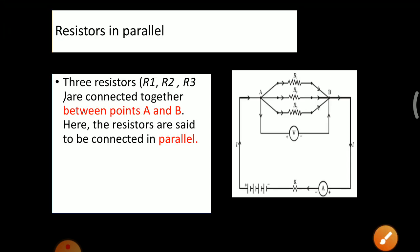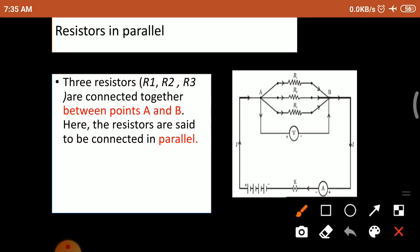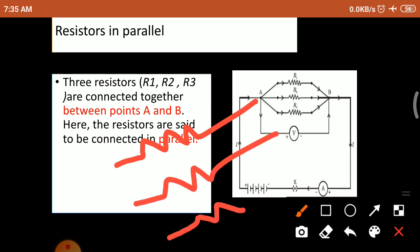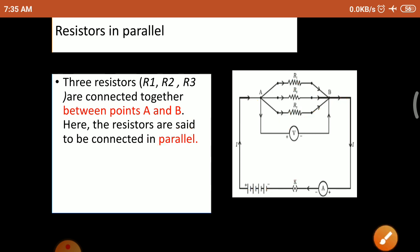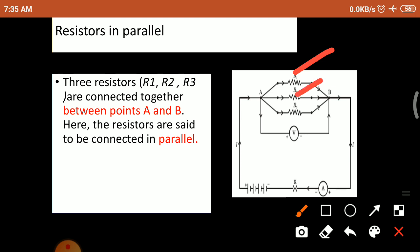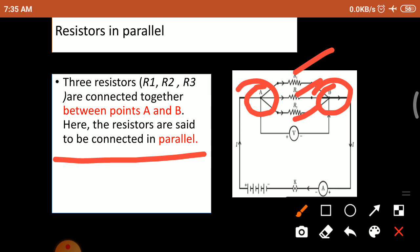Resistors in parallel: when three or more resistors are connected between two points, the connections are said to be in parallel. Here resistor 1, resistor 2, and resistor 3 are connected between point A and point B. R1, R2, R3 are connected between A and B, so this connection is said to be parallel.